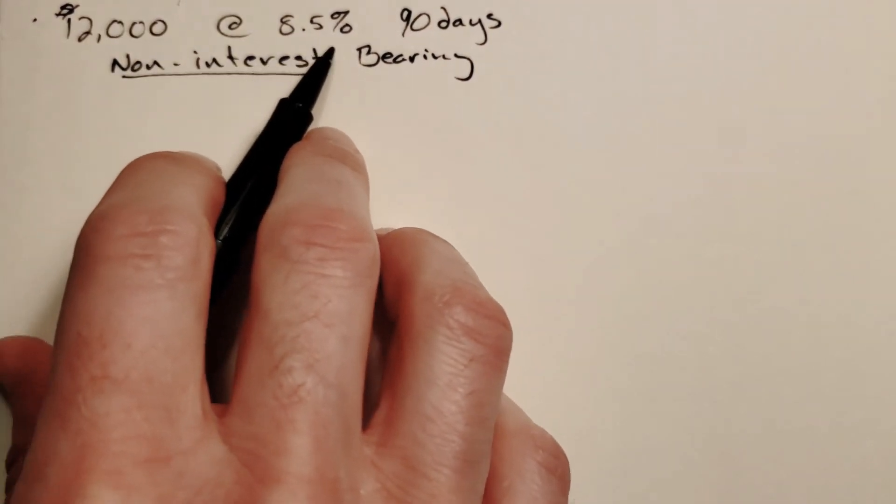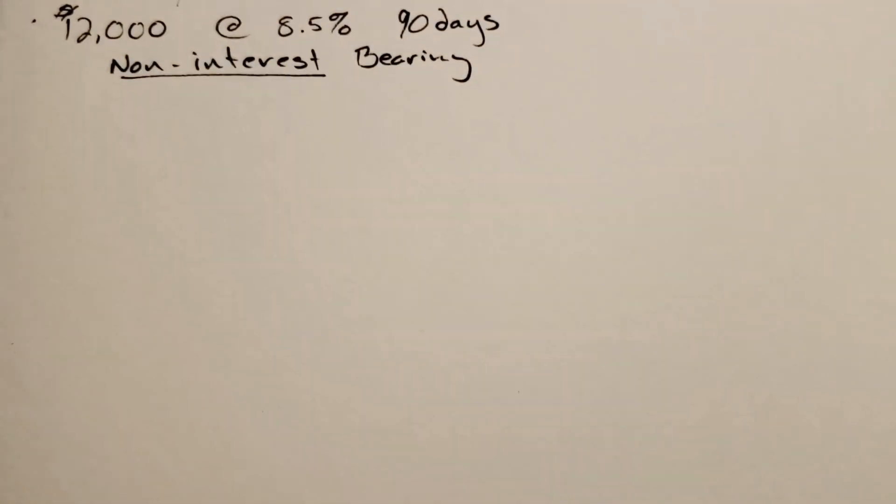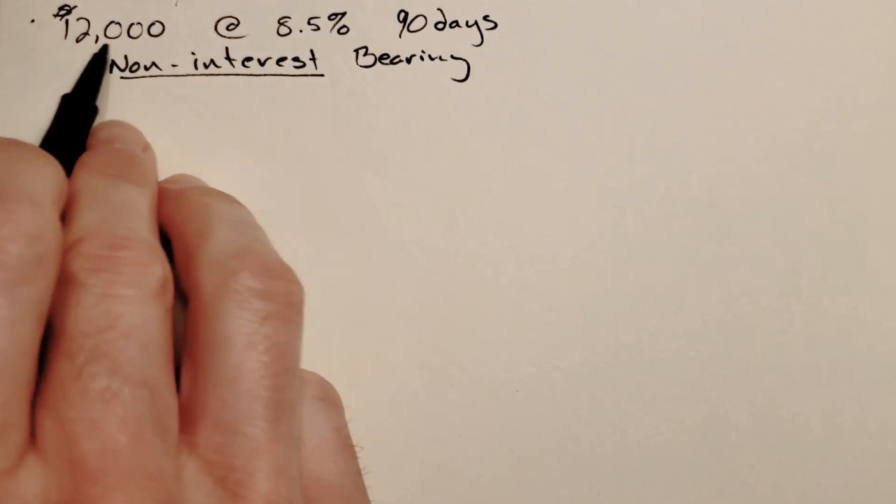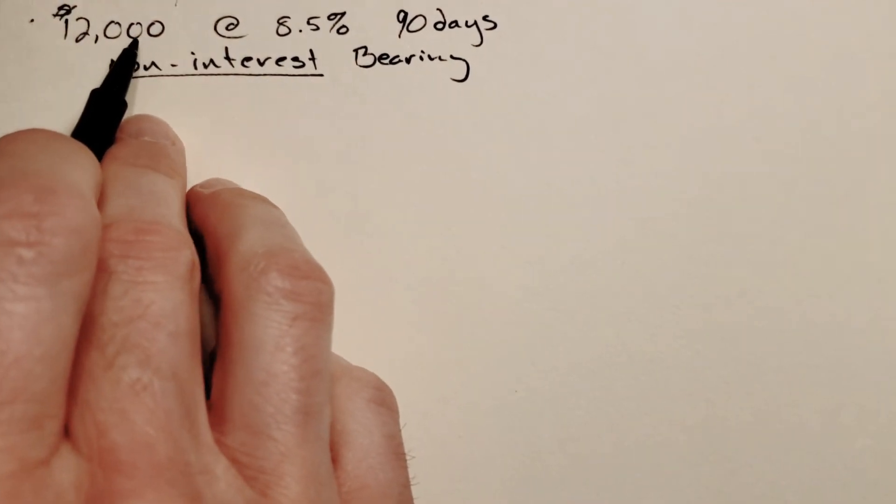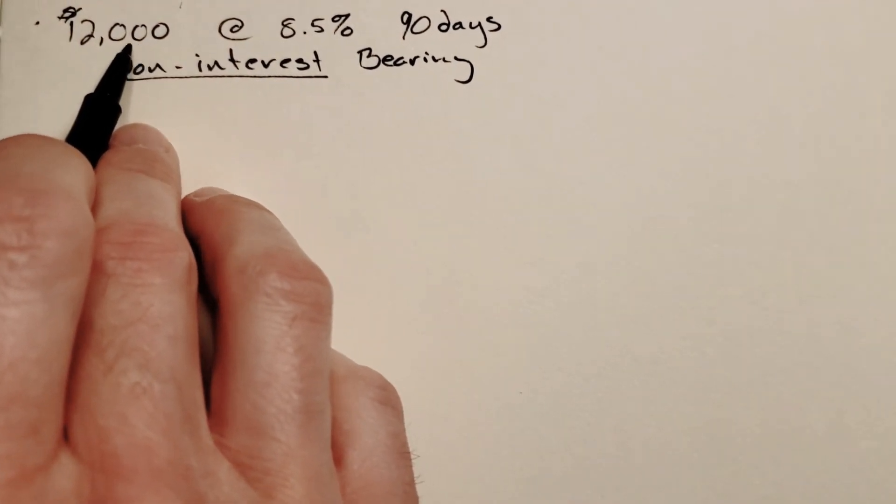This means we're going to be finding the bank discount and taking that away from this $12,000 so that you get less initially but you pay back $12,000.